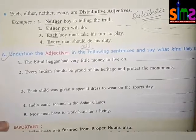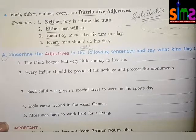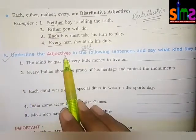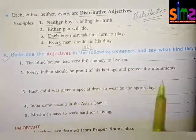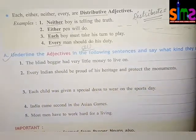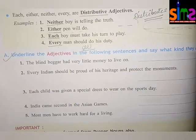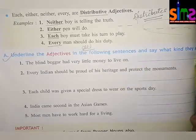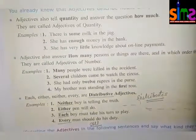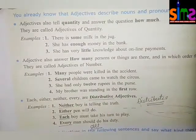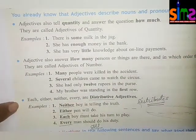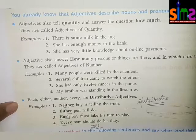I will be reading the question and then I will be reading the sentences. Firstly, the question is: underline the adjectives in each sentence. Then we have to say what kind they are — whether the adjectives are adjective of quantity, adjective of number, or distributive adjective.